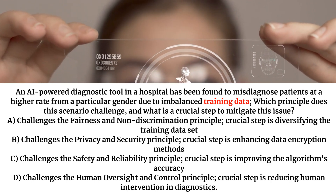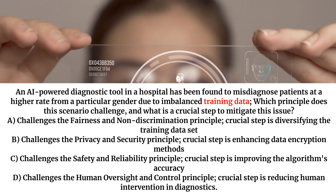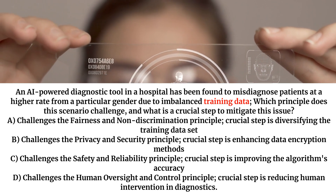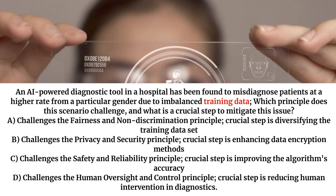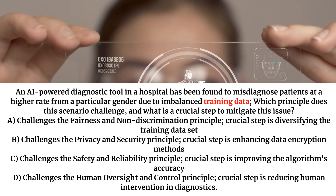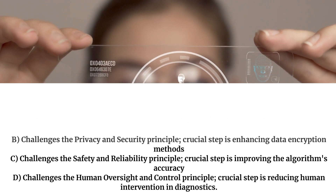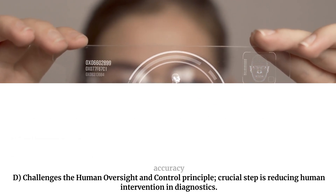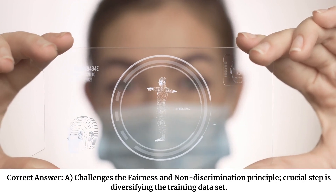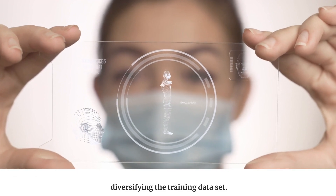A. Challenges the fairness and non-discrimination principle; crucial step is diversifying the training data set. B. Challenges the privacy and security principle; crucial step is enhancing data encryption methods. C. Challenges the safety and reliability principle; crucial step is improving the algorithm's accuracy. D. Challenges the human oversight and control principle; crucial step is reducing human intervention in diagnostics. Correct answer: A — Challenges the fairness and non-discrimination principle; crucial step is diversifying the training data set.